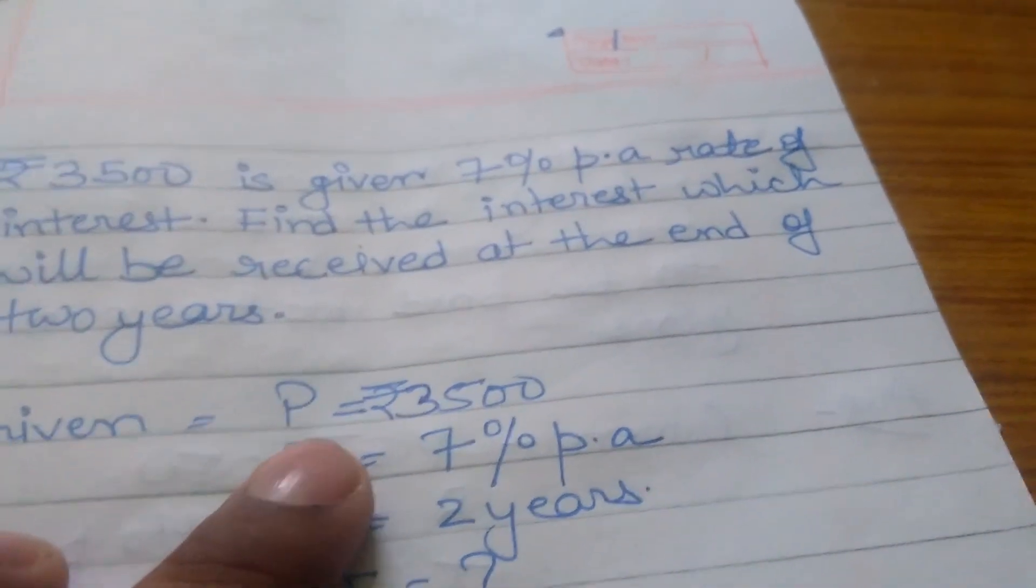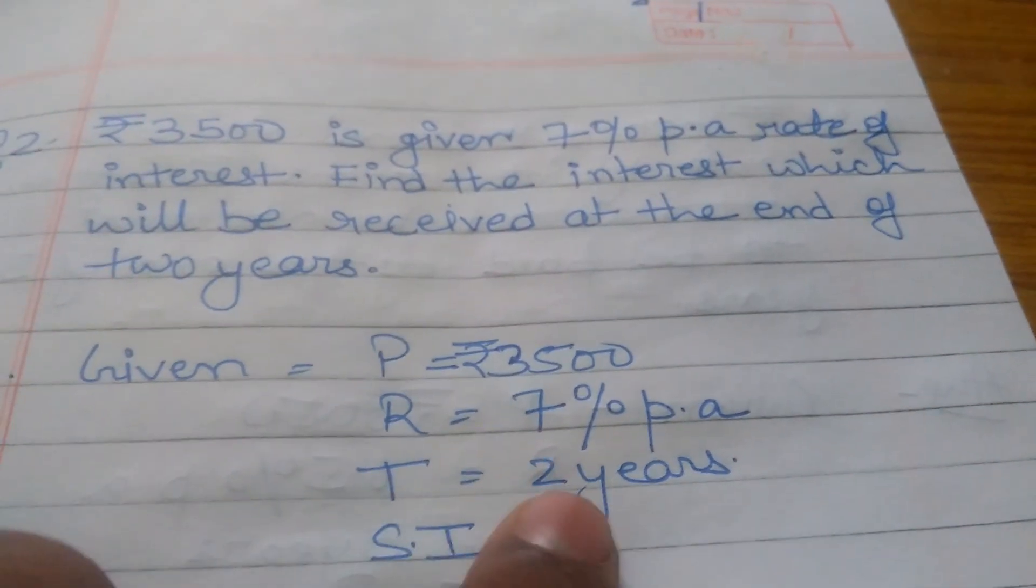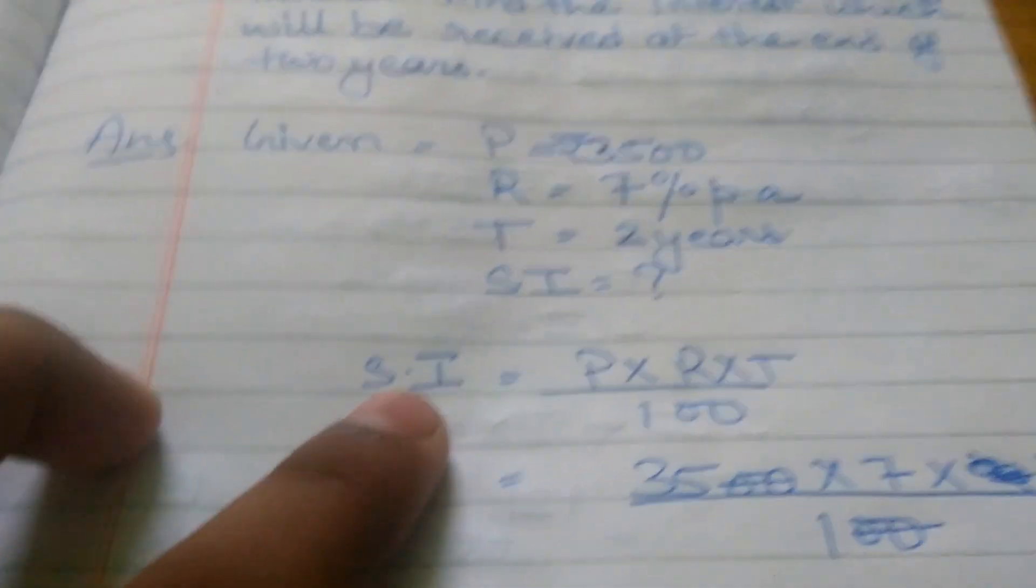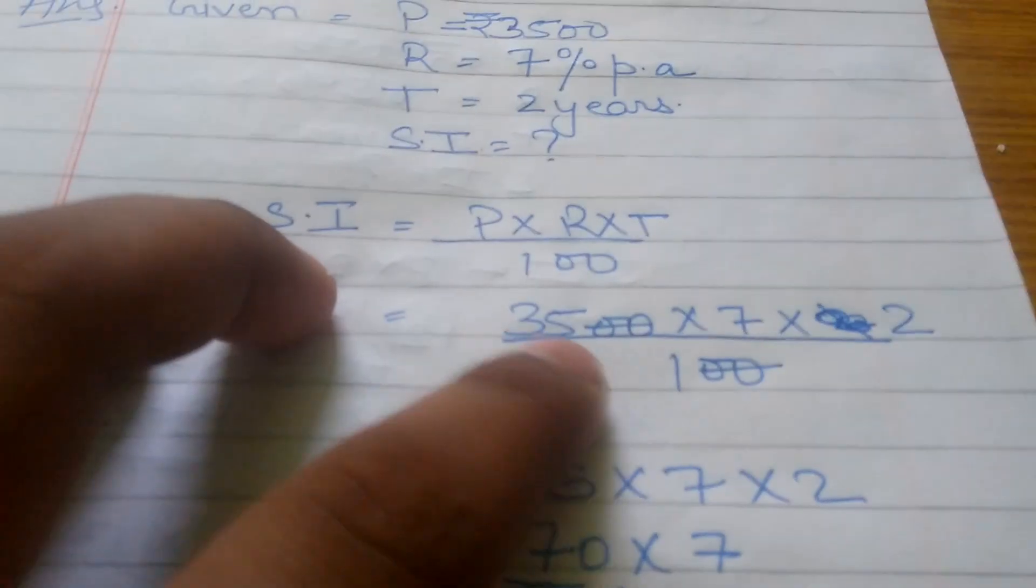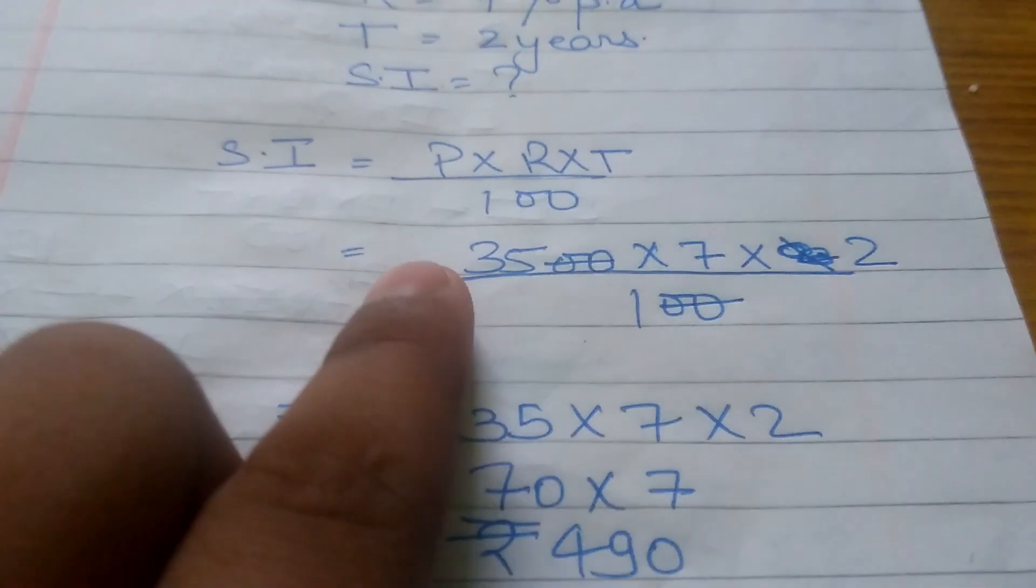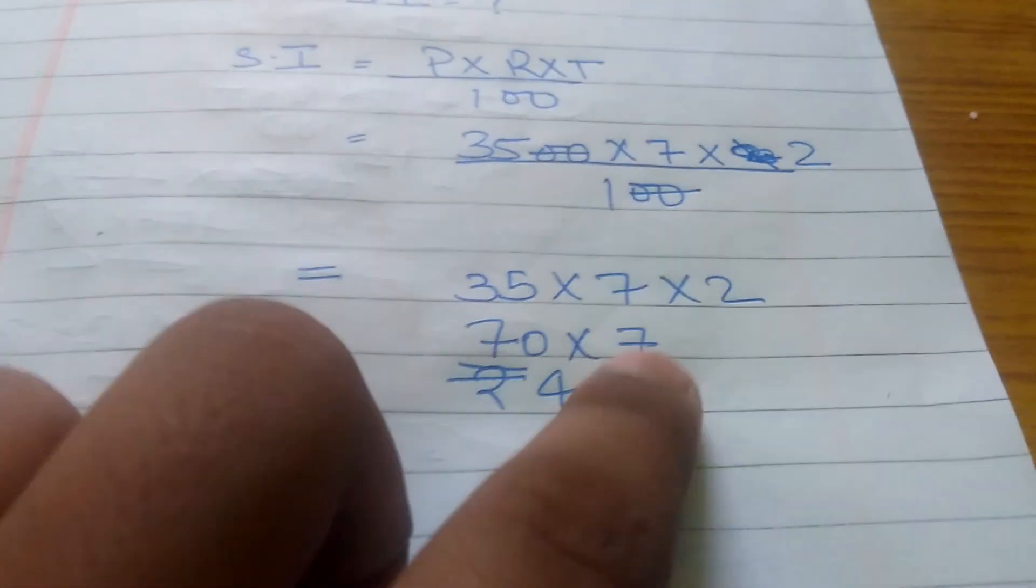In this question, Given: Principal = ₹3,500, Rate = 7% per annum, and Time = 2 years. We have to find Simple Interest. The formula is Principal × Rate × Time ÷ 100. Then 3,500 × 7 × 2 ÷ 100. 3,500 divided by 100 is 35. So 35 × 7 × 2. 35 × 2 is 70, multiply by 7, which equals ₹490. The Simple Interest is ₹490.